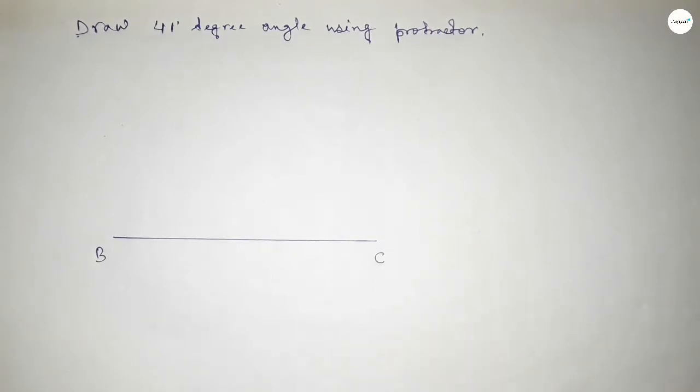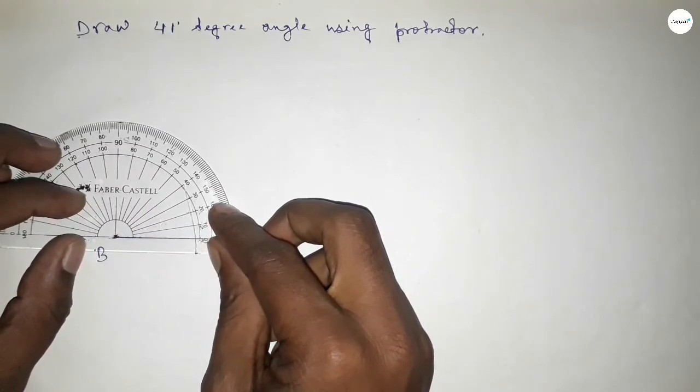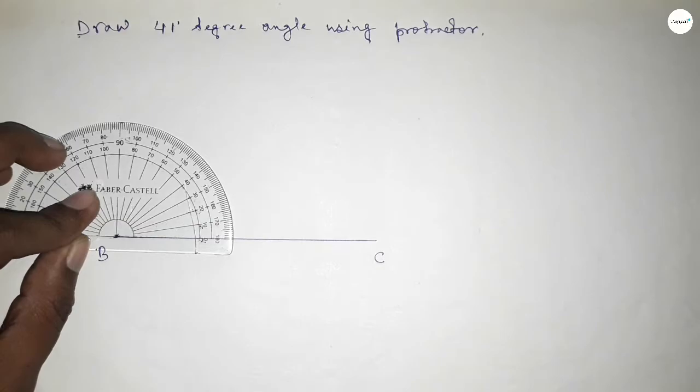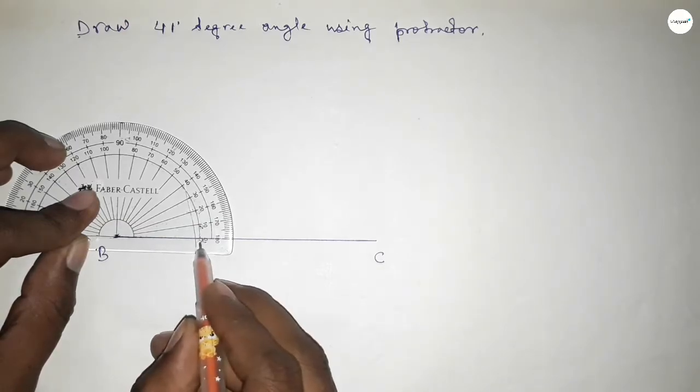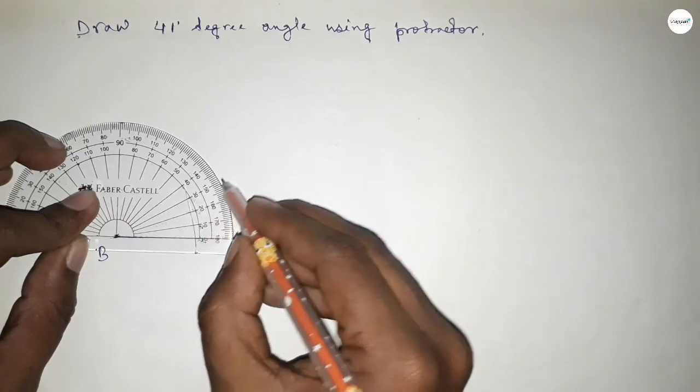Now putting the protractor on point B perfectly, then counting the angles. So this is 0, 10, 20, 30.